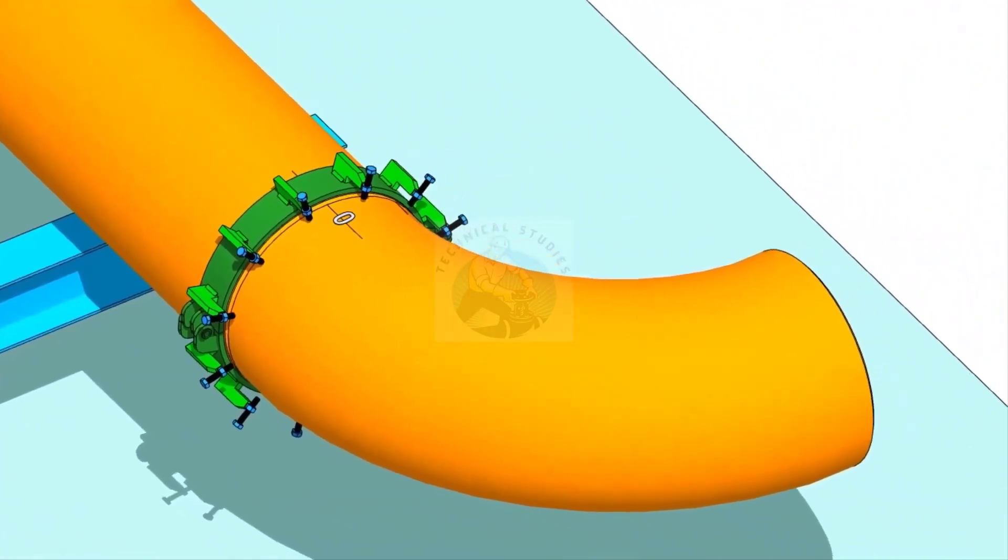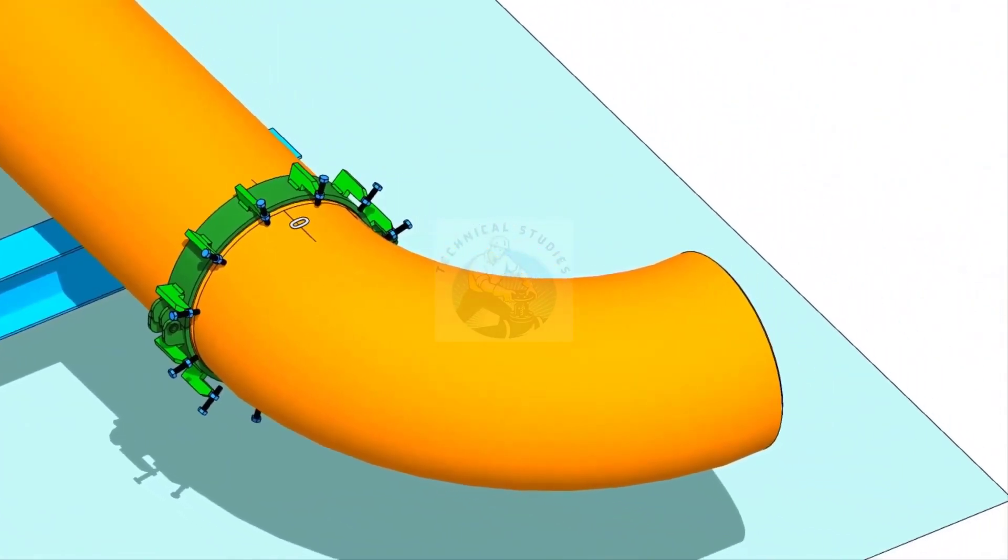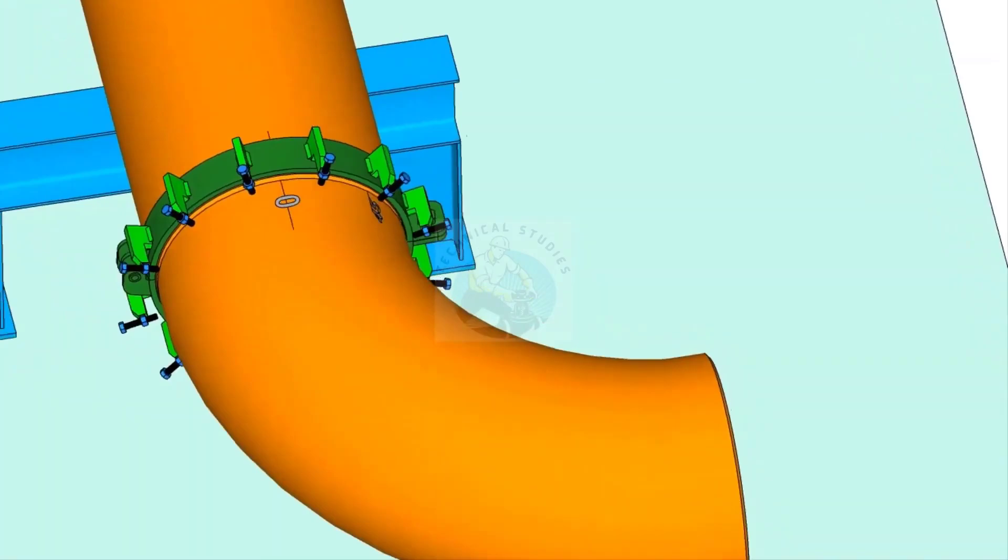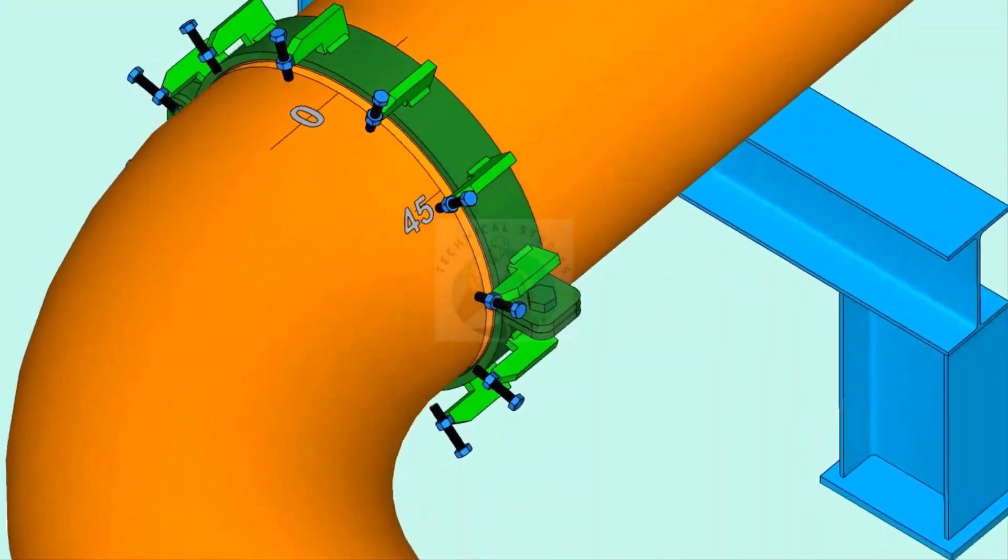Put the elbow on the pipe clamp. Make sure the marked end is near to the pipe. Arrange proper supports below the elbow.